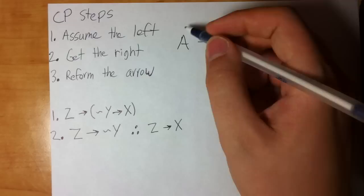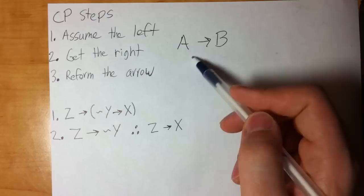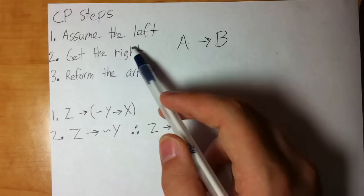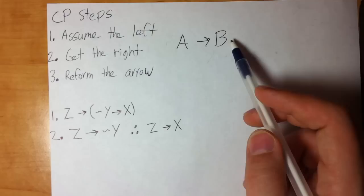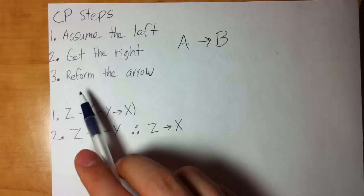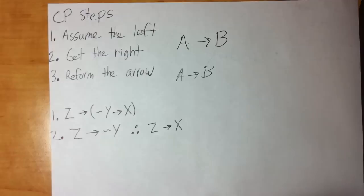Step one: assume A. Step two: get the right — abbreviation for 'get the right side of the arrow you're trying to form.' So you assume A in step one and try to get the right side in step two. We start with A, assume A, and our goal is to get to B. Once we get B, we finish step two, but not before then.